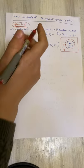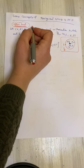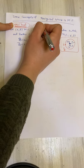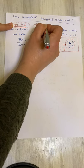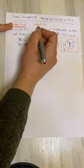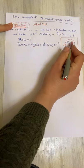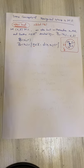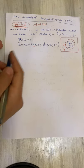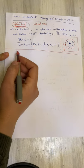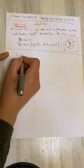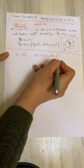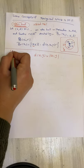This open ball is also called a neighborhood of x₀. In one dimension, if X = R, the distance between x and y is the absolute value |x - y|.